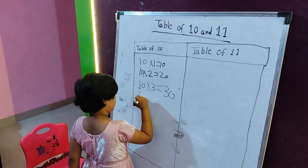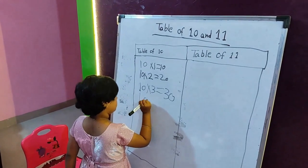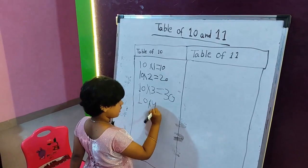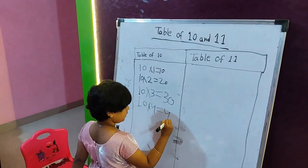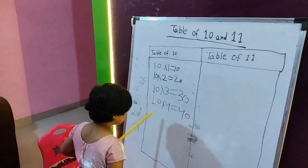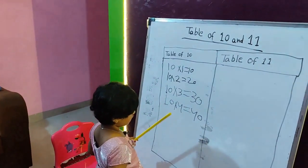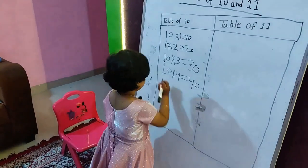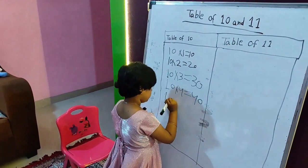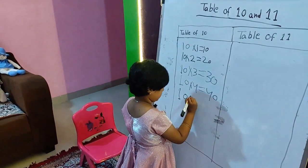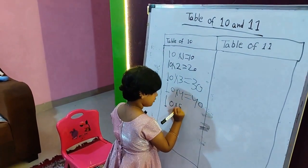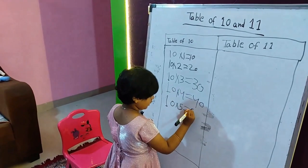Next. Ten multiply four equals forty. Do you know what? I like ten multiply four equals. Ten multiply five equals fifty.